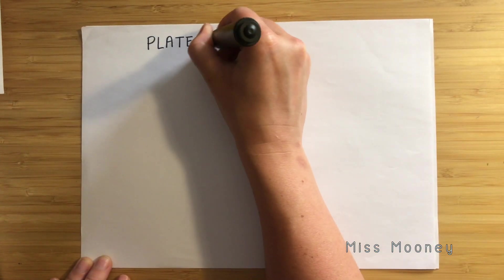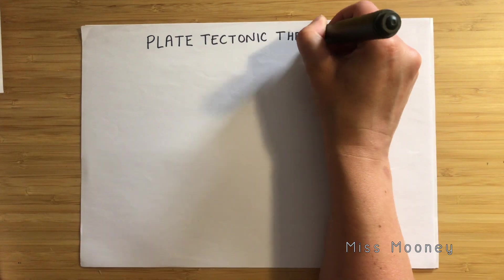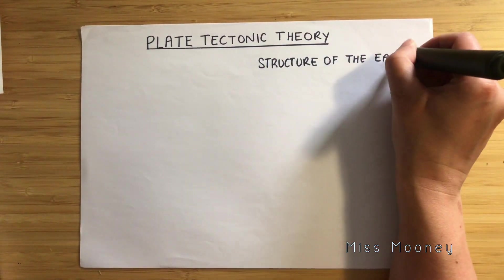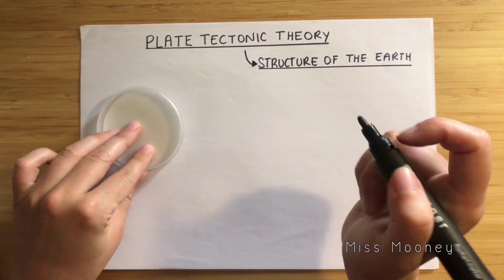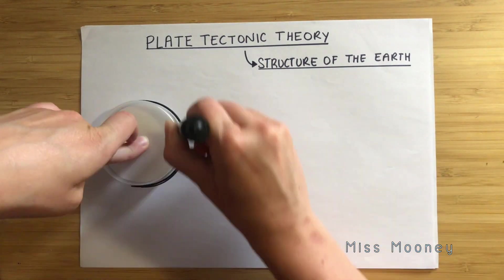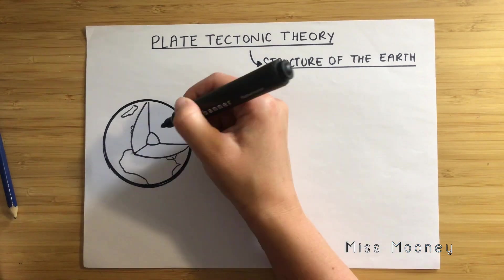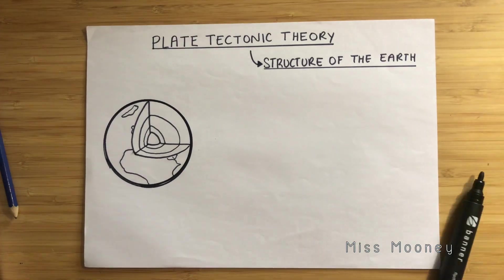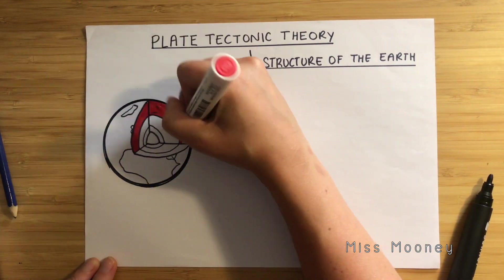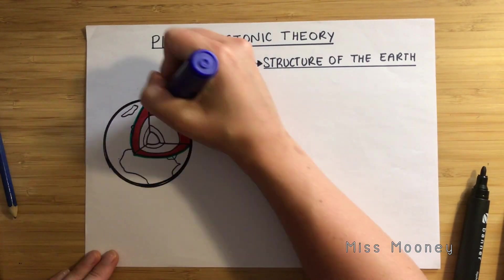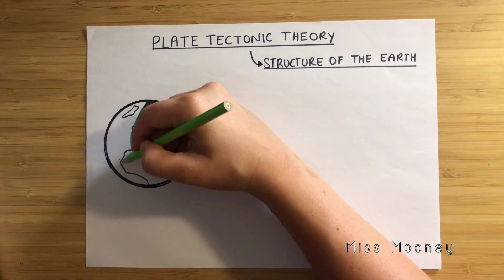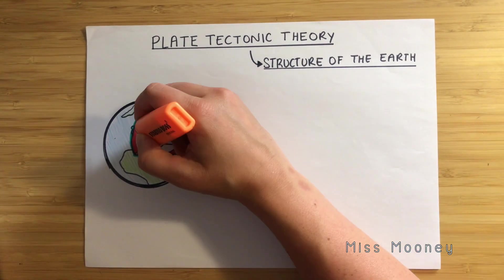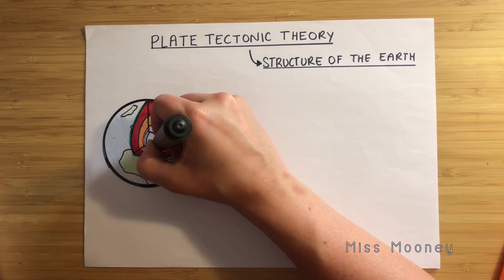To start, we are going to revise the structure of the earth and explore what is happening below our feet. Draw yourself a diagram of the earth — it doesn't need to be three-dimensional, just a simple cross section will work. Take a look at the diagram on BBC Bitesize; the link is in the description if you need support to help you draw the structure of the earth.